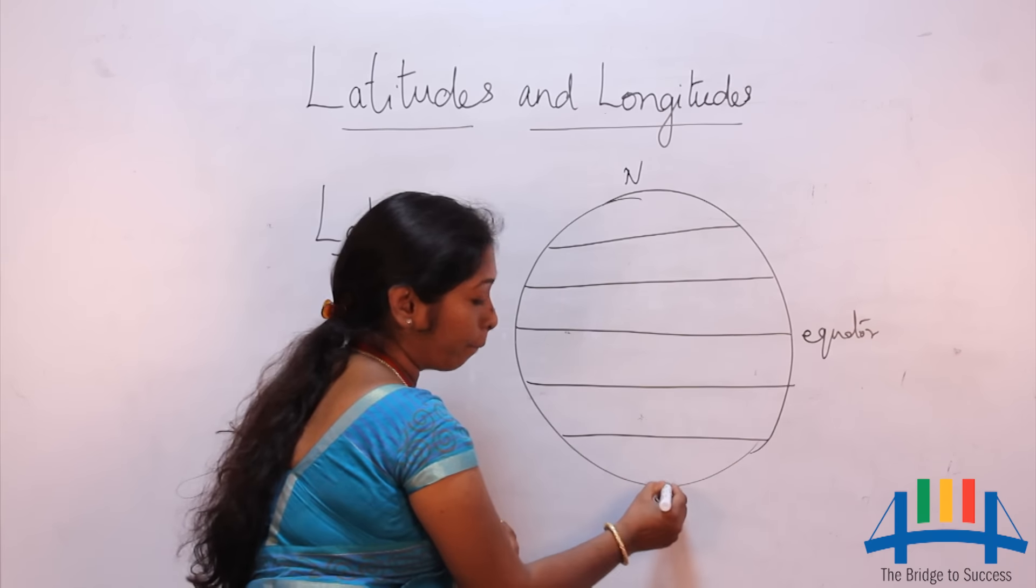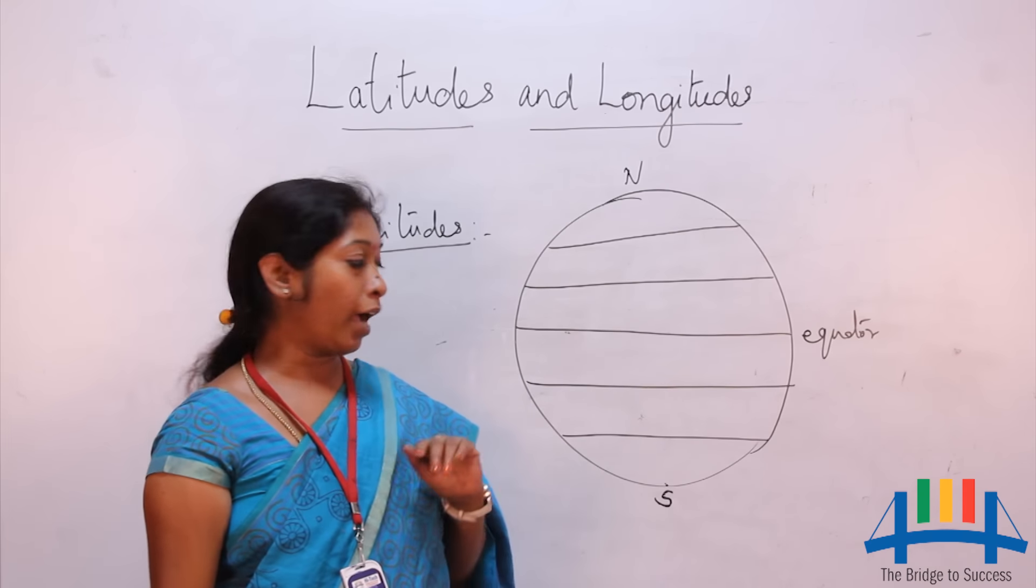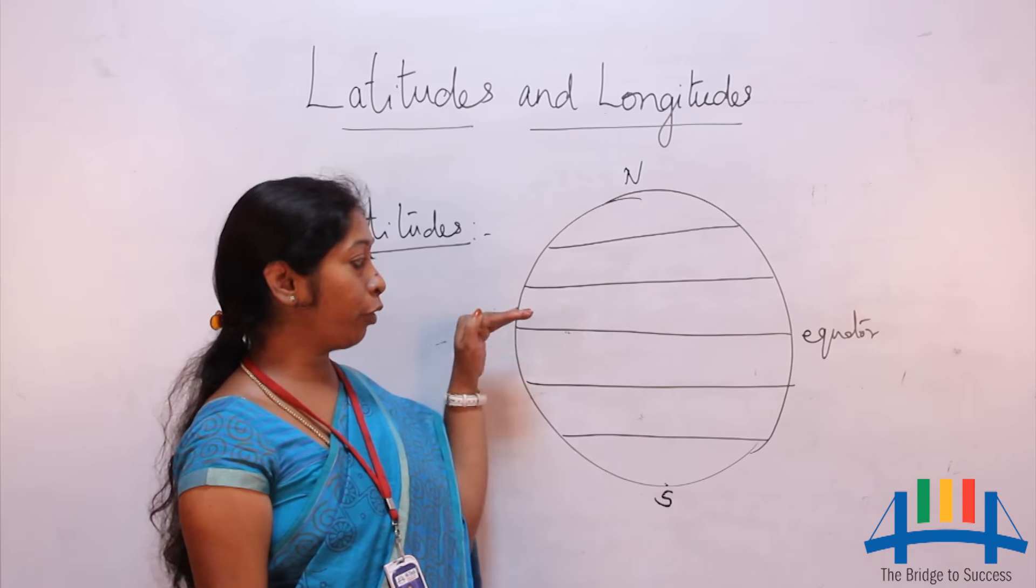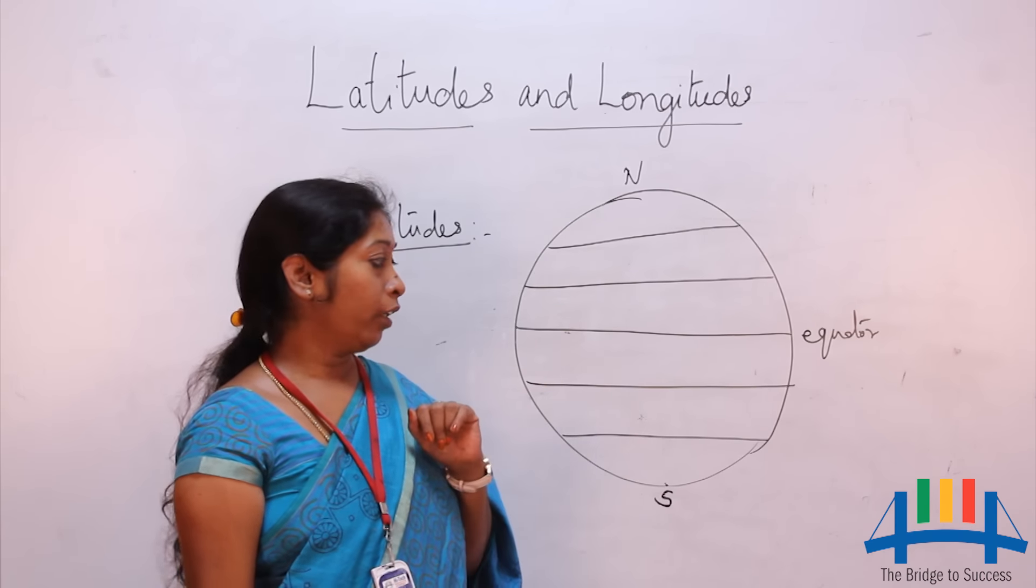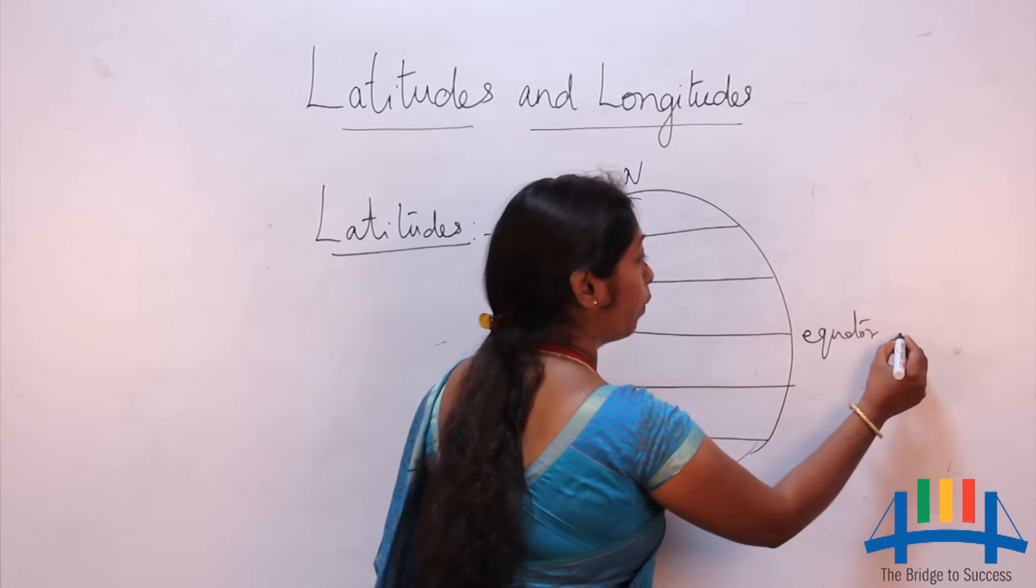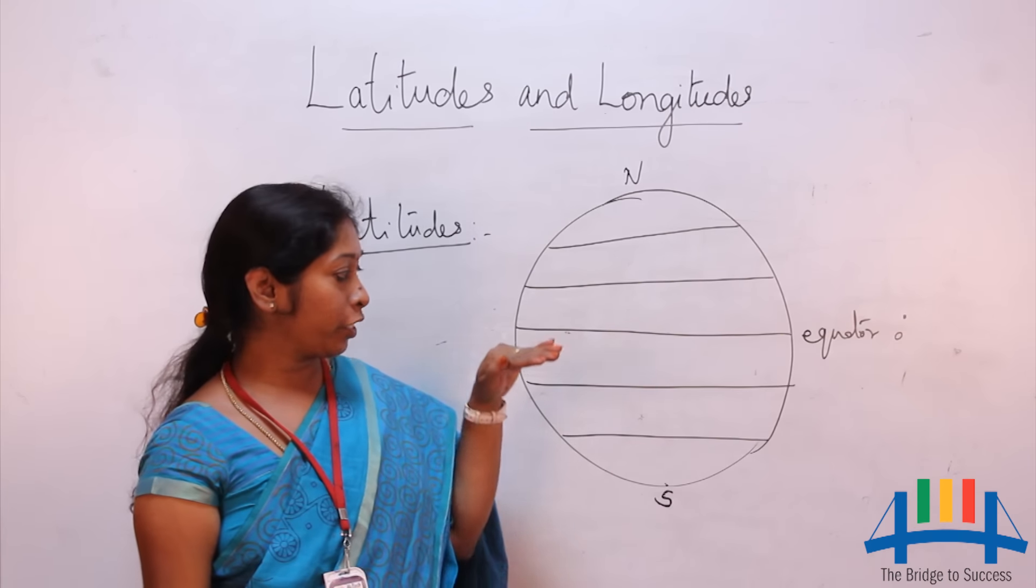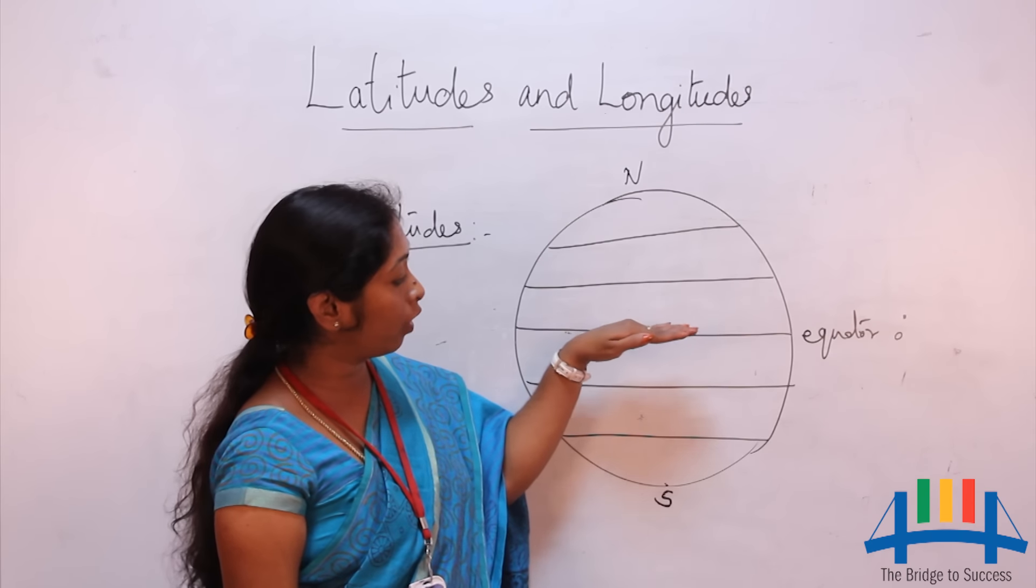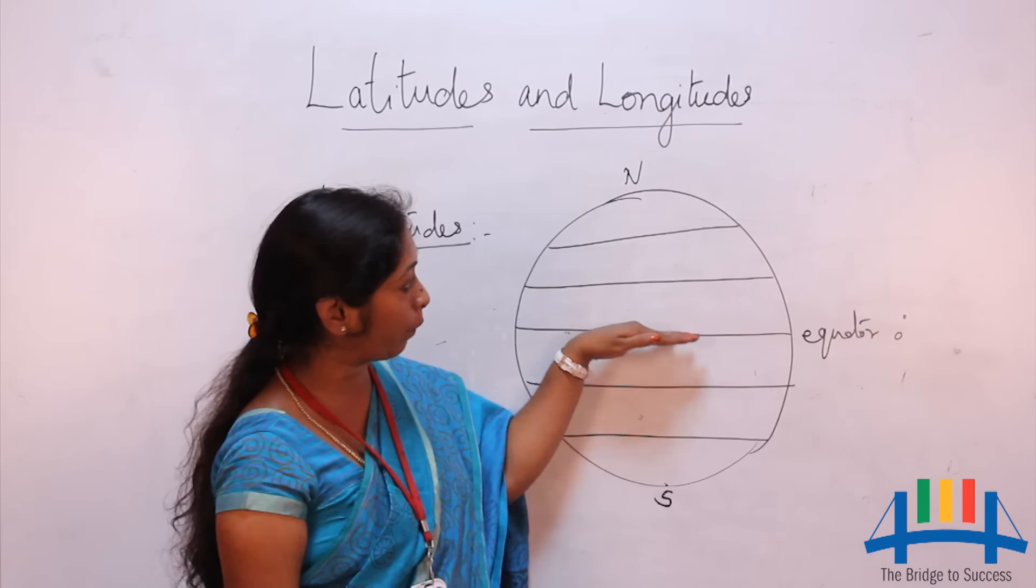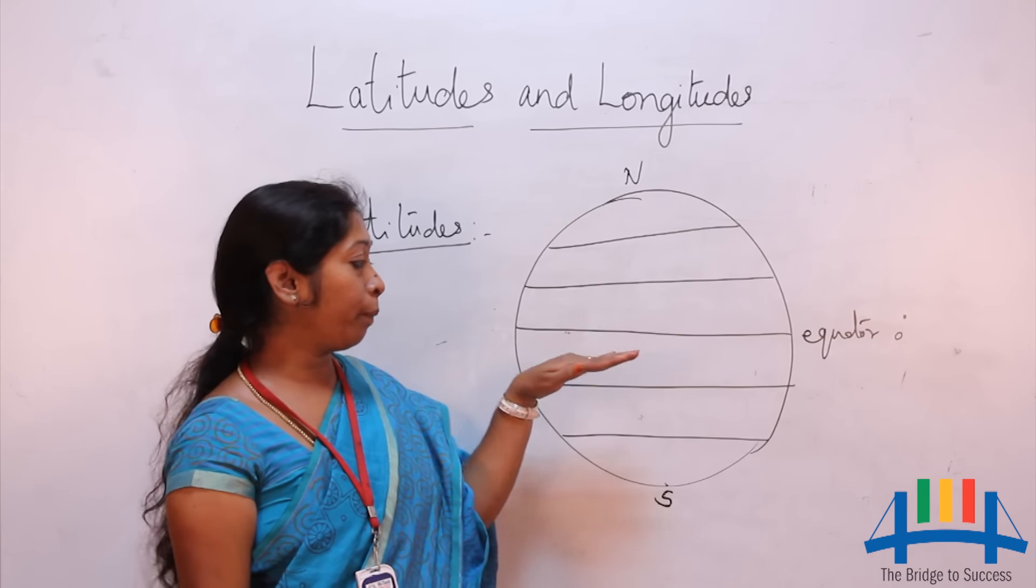There are 181 latitudes. The latitude that divides the earth into two equal halves is called the equator, with a value of zero degrees. The part of the earth which lies between the equator and the north pole is called the northern hemisphere, and the part which lies between the equator and the south pole is called the southern hemisphere.